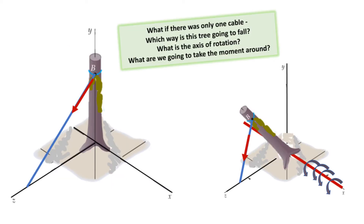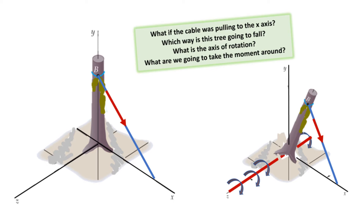The moment vector can be confusing, so let's split this apart and think through what each cable is doing to the tree. The first cable is pulling down and forward, which creates a rotational motion mostly around the x-axis. So the force at B from this cable — going up the tree trunk and pulling at B — is going to rotate it around the x-direction. The other cable pulling at B is going to create a rotational motion around the z-axis.